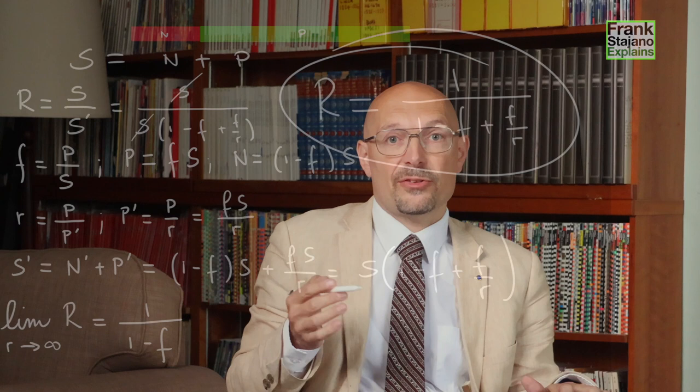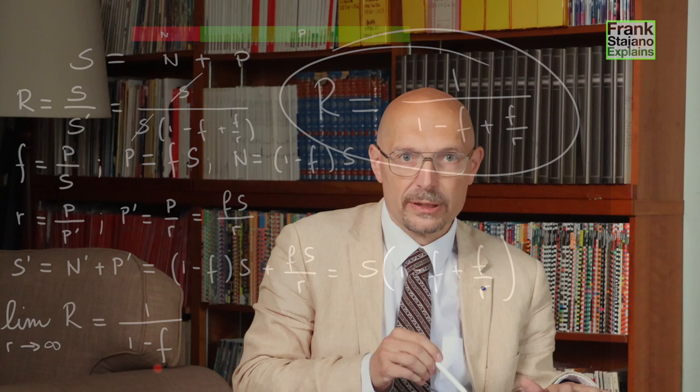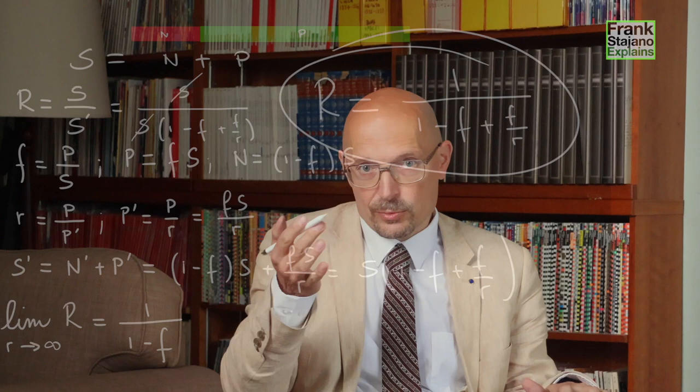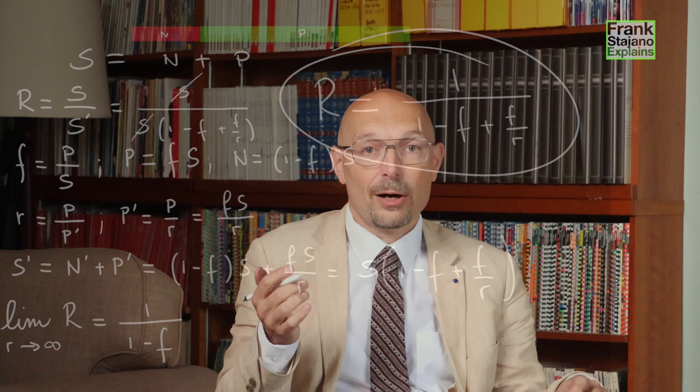If f is 3 quarters, like in our example, then the denominator is 1 minus 3 quarters is 1 quarter, and 1 divided by 1 quarter is 4. And so the maximum possible speed up I can get is 4 times, which is exactly what we discovered earlier. We did the example numerically. So Amdahl's law gives us a quantitative limit for how much of an improvement we can obtain based on how large the improvable part is with respect to the whole of s.